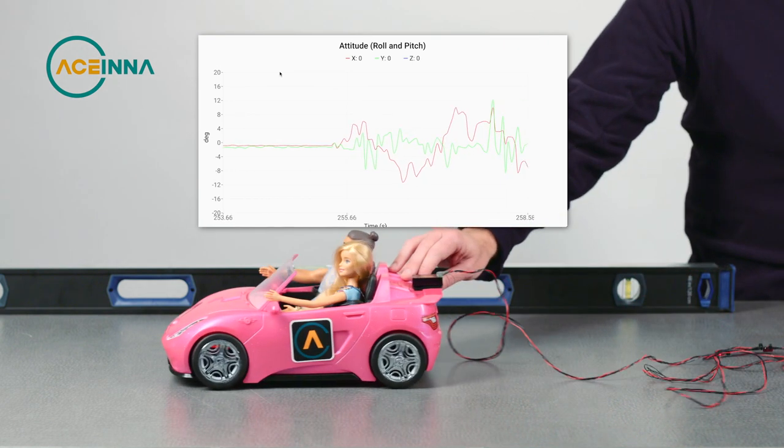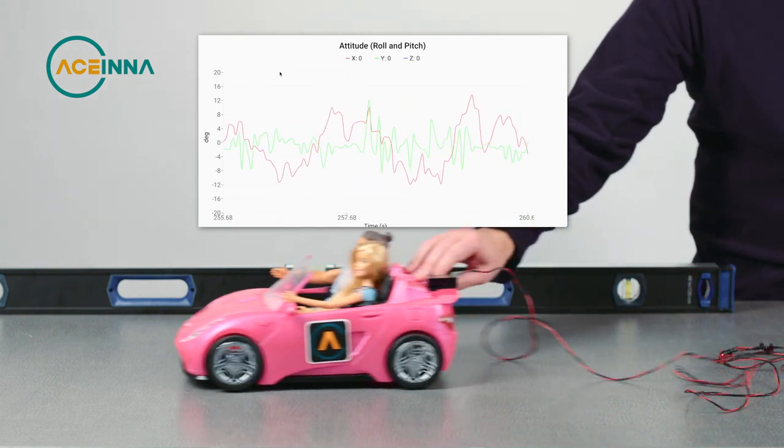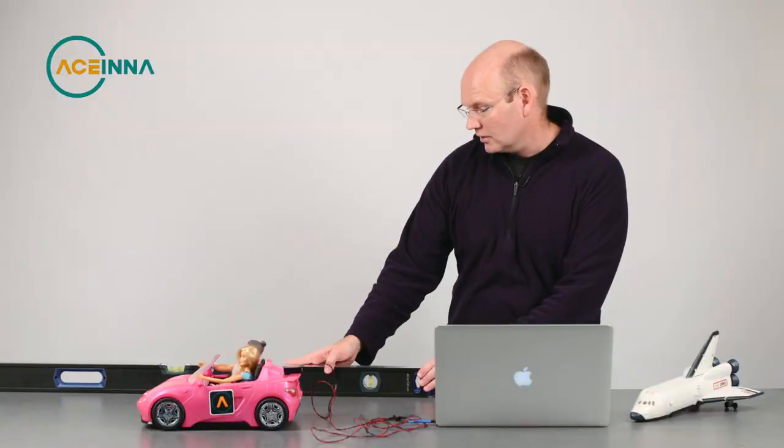We can see the same thing on Barbie's car. If we roll Barbie's car back and forth, we can see that the pitch angle, which should be zero, Carpenter's level is showing it as flat, we can see it actually respond vigorously. So, what do we do about this problem?